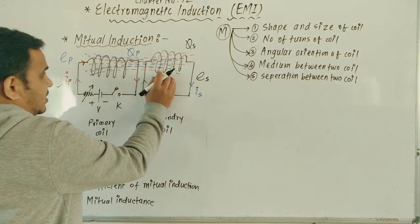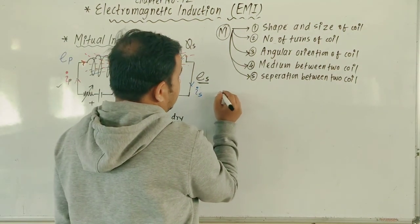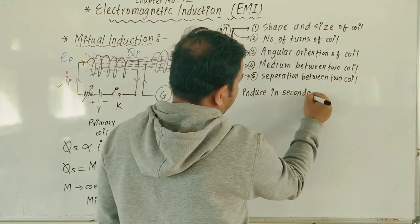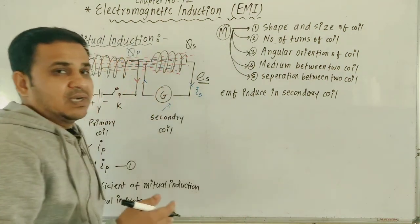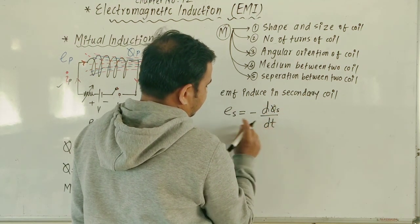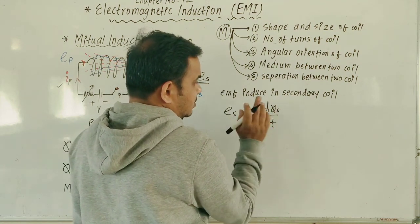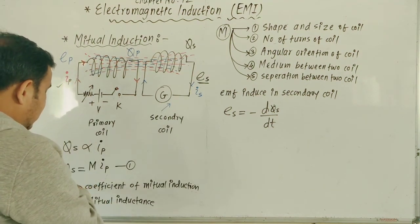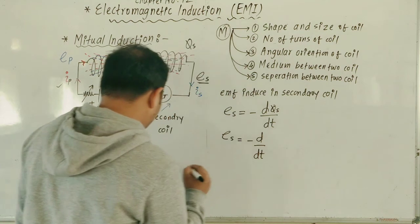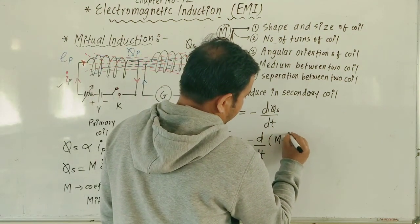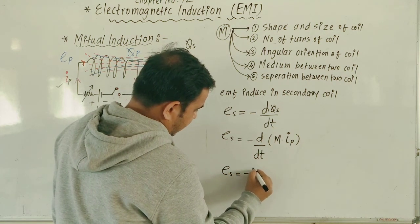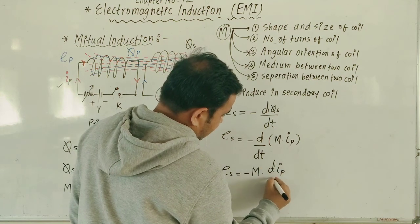Now let us see the EMF induced in the secondary coil. We can write: E_S = −dΦ_S/dt, because EMF is induced in the secondary because of change in flux. Substituting Phi_S = M × I_P from equation 1 into this: E_S = −d/dt(M × I_P). Since M is a constant, E_S = −M × dI_P/dt.